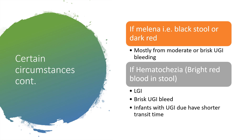Still on certain circumstances: if there is melena stool — that is black stool or dark red — that is mostly from moderate or brisk upper GI bleeding. But if it is hematochezia — that is bright red bloody stool — you should be thinking about lower gastrointestinal cause, though it can also be from brisk upper gastrointestinal bleeding, particularly in infants with upper gastrointestinal bleeding because they have shorter transit time and gastric emptying is faster in them.